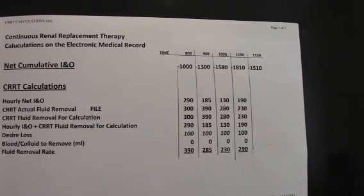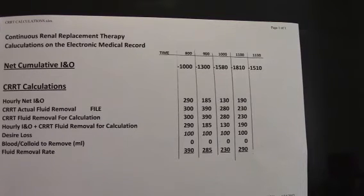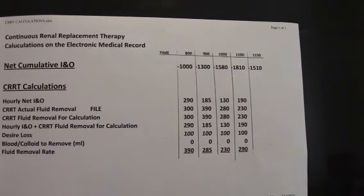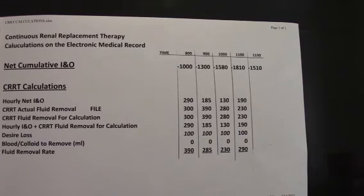Another important rule to remember is that when you are calculating your intake and output, always do it at the top of the hour exactly — 11 a.m., not 11:15 or 11:30. Otherwise, the computer will not calculate your intake and output correctly.